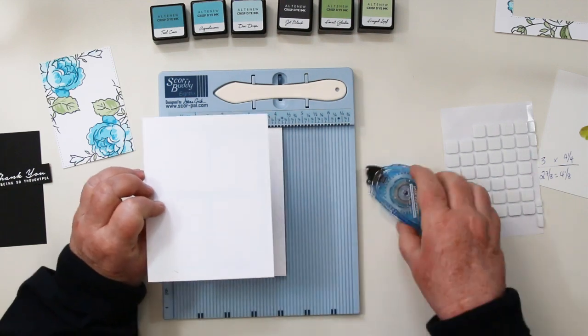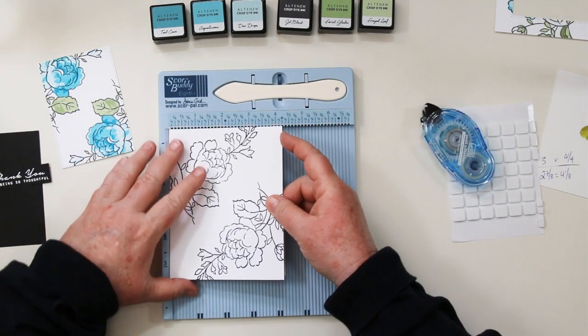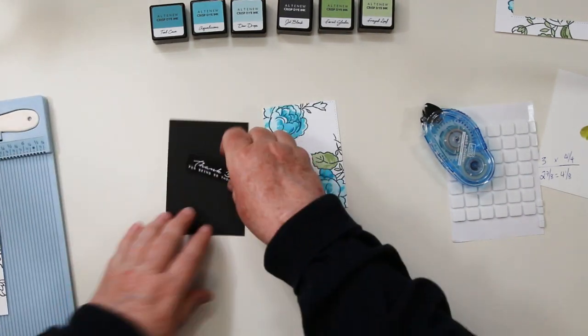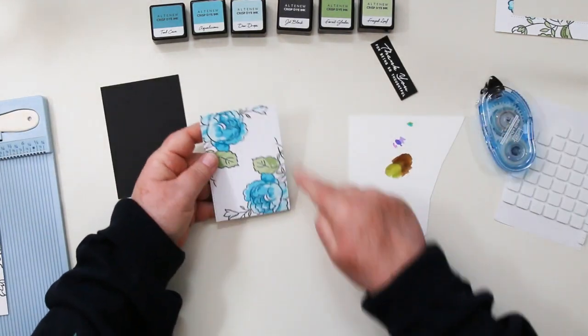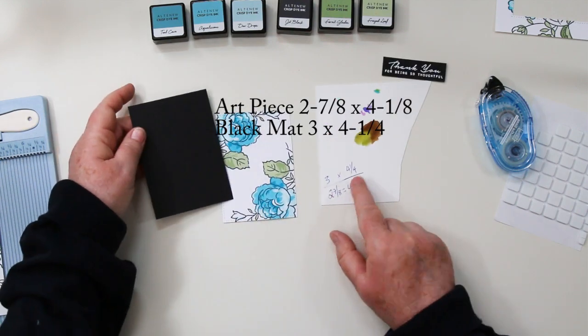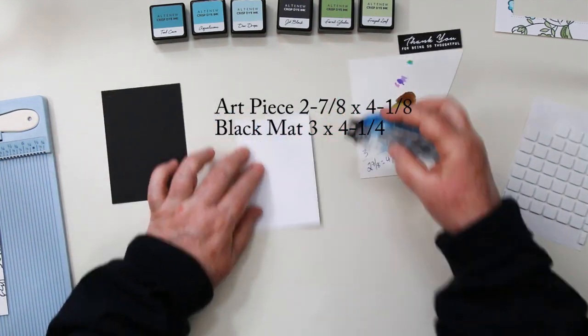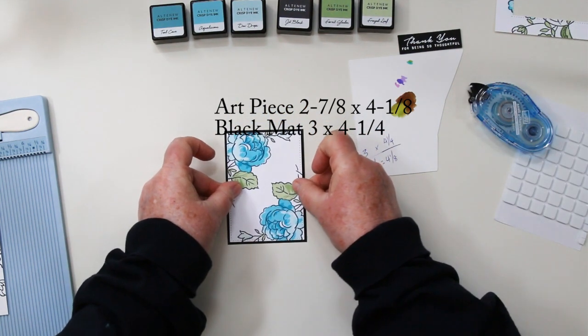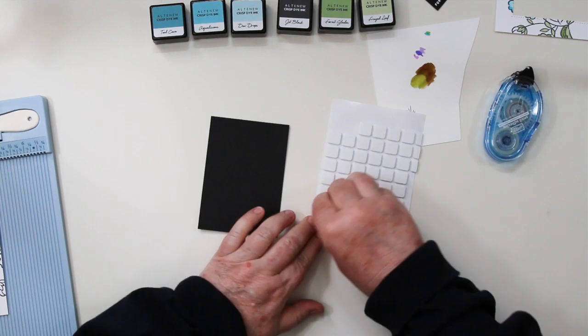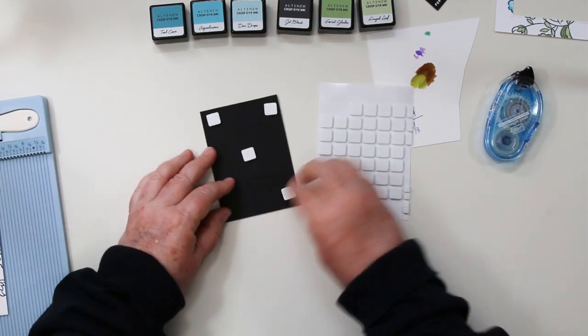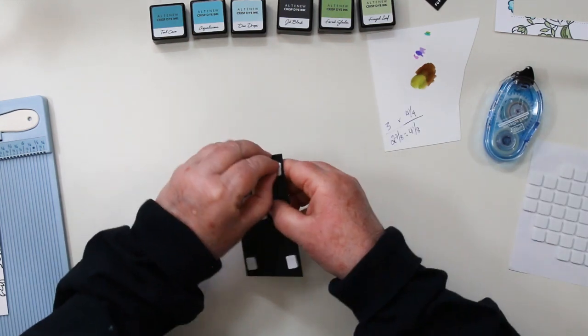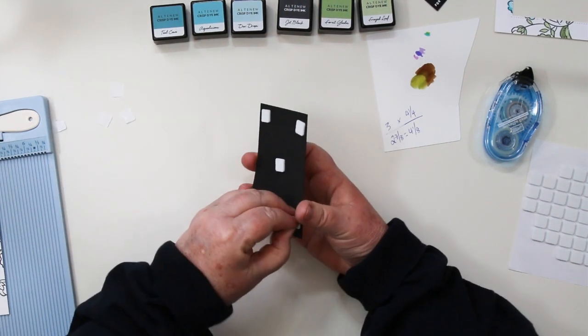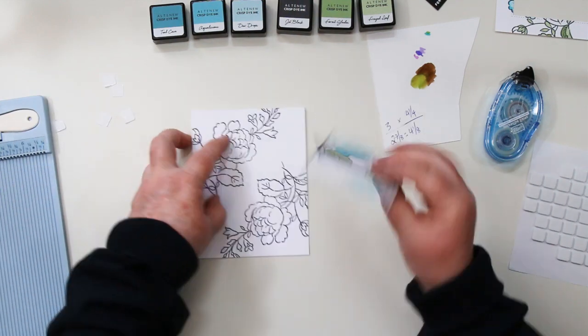For your black and white one, you are going to lay that down onto your card front. This is a two, so it's 4 and a quarter by 11, scored and folded at 5 and a half. The art piece is 2 and 7/8 by 4 and 1/8, so I made the black mat 1/8 of an inch bigger. I'm just attaching that and then I'm going to put foam squares on the back because I want this to be raised up just a little bit for some added interest.